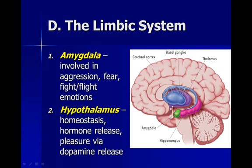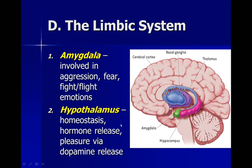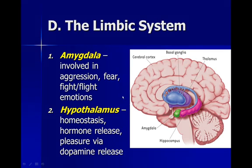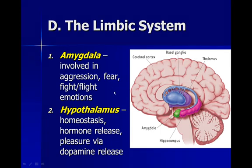Right in this region is the pituitary, the hypothalamus, and also the olfactory bulb — the part of the brain responsible for our sense of smell, tied in directly with emotion and memory, which you're probably familiar with. The hypothalamus is an important part of the subcortical structure involved in homeostasis. We've talked about hormone release in lectures about the nervous system. It is also involved in regulating our sense of pleasure by releasing dopamine.